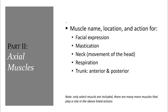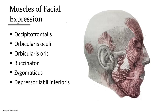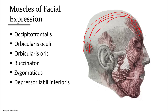Moving on to our axial muscles. There are many muscles on the face, and we're going to cover a few of them here. Occipitofrontalis begins with the muscles on our forehead, and it also has muscles on the back in our occipital area. They are connected by an aponeurosis. So when you lift your eyes up in surprise, you can often feel the back of your head shrugging as this contracts.